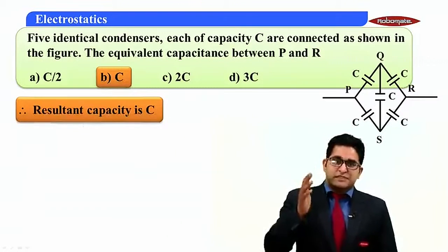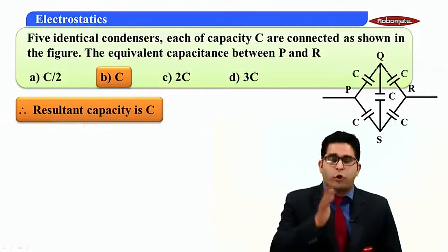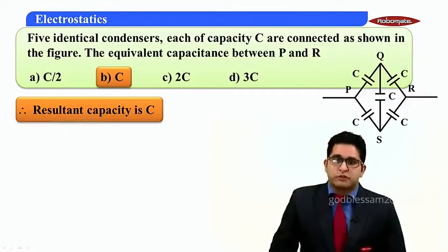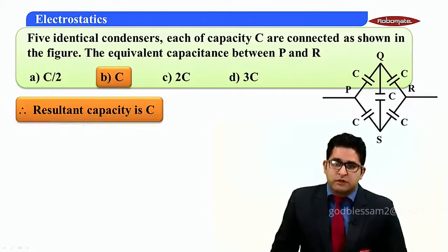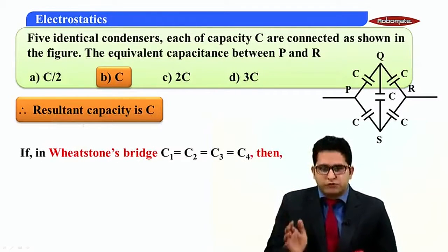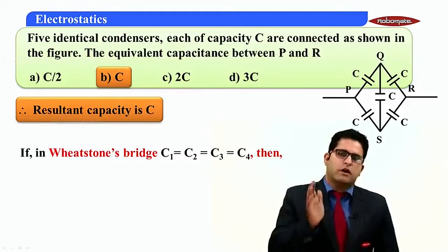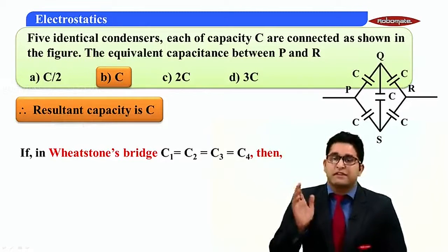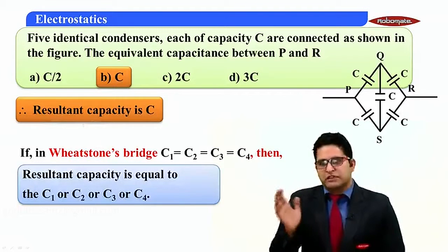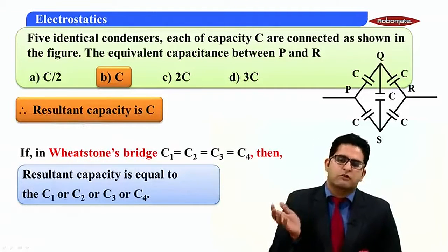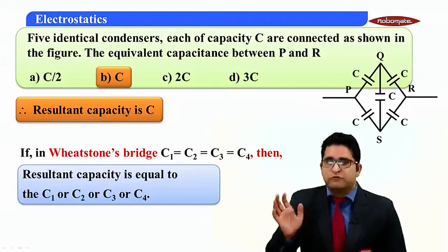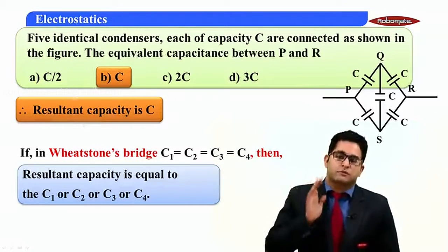In this case, C1 = C2 = C3 = C4, and the resultant capacity was also equal to C. So we can say: if in a Wheatstone Bridge C1 = C2 = C3 = C4, then the effective resultant capacity is equal to any one of them — either C1, C2, C3, or C4. This concept will be used in the forthcoming MCQs.